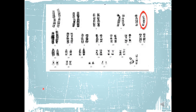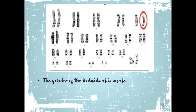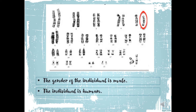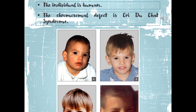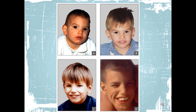Third karyotype — the gender of the individual is male, the individual is human. The chromosomal defect is Cri-du-chat syndrome. Cri-du-chat syndrome is caused by the deletion of part of the short arm of chromosome number 5. Example of Cri-du-chat syndrome.